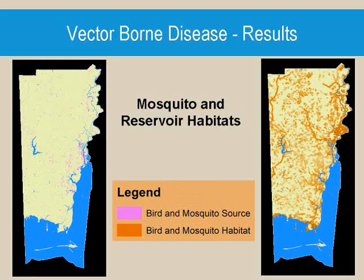These maps show the areas of overlap with the mosquitoes and birds, giving a good reflection of where genesis of disease could occur. The map on the left shows where the mosquito source, unbuffered, and bird habitats overlap, while the right map shows the mosquito habitats, buffered, and bird habitat overlap.